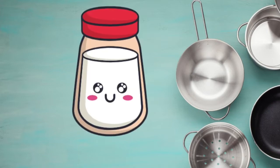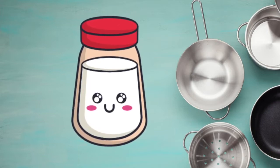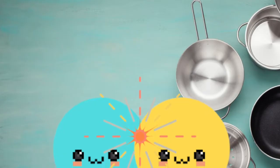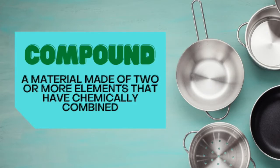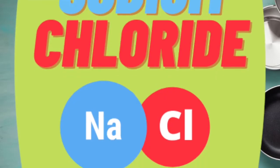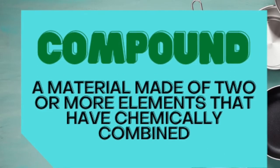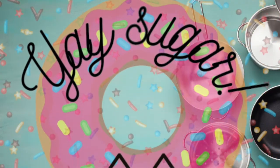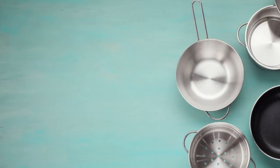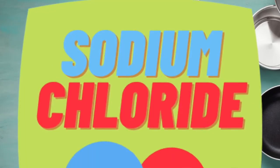Now when you look at salt, it looks very pure to us, even though it's made of two different elements — two different types of atoms. It looks so pure because the sodium atoms and the chlorine atoms have chemically combined, meaning they have bonded together. Compounds are materials that form when two or more different types of elements chemically combine. So salt, or sodium chloride, is a compound. Other compounds include carbon dioxide, baking soda, water, and my favorite kitchen compound of all: sugar. By the way, if you really want to freak your family out during Thanksgiving, ask them to pass the sodium chloride and watch their faces.